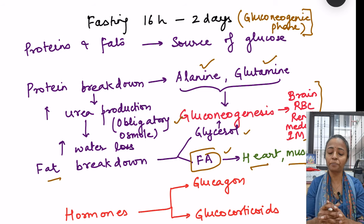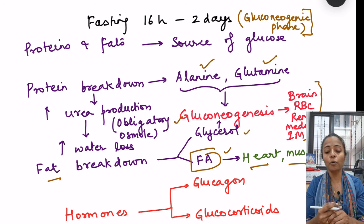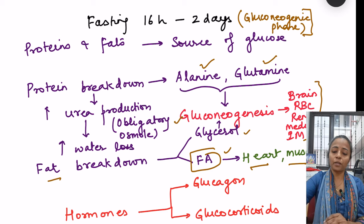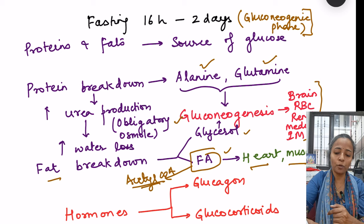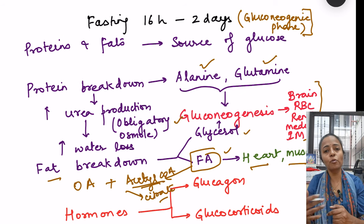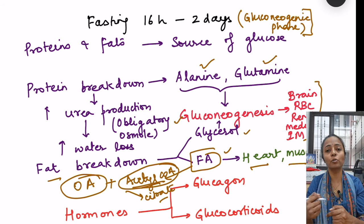In this stage of fasting — 16 hours to 2 days — a lot of new glucose is being synthesized, causing a lot of protein breakdown. Also remember that fat breakdown is generally not a direct source of glucose, because fat is broken down into fatty acids and glycerol, and beta-oxidation of fatty acids produces acetyl-CoA. For acetyl-CoA to enter the Krebs cycle it must combine with oxaloacetate to form citrate, but because gluconeogenesis is consuming oxaloacetate, not much oxaloacetate is available, so acetyl-CoA cannot enter the Krebs cycle.